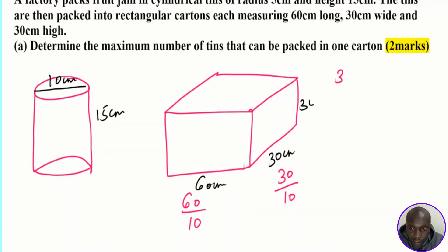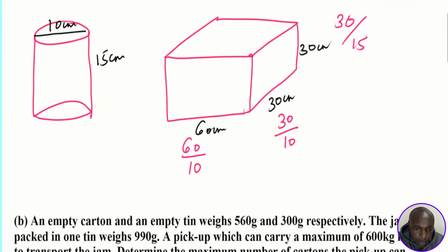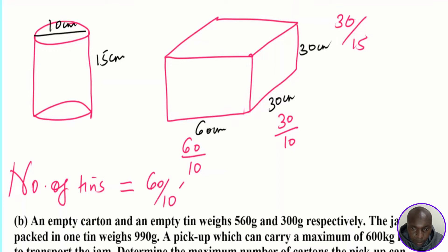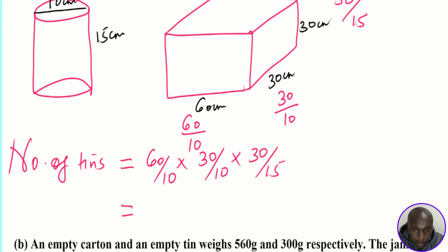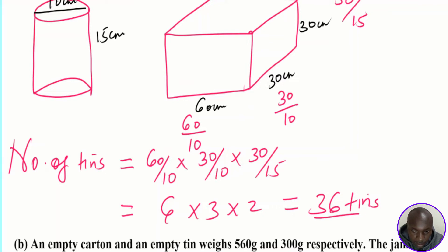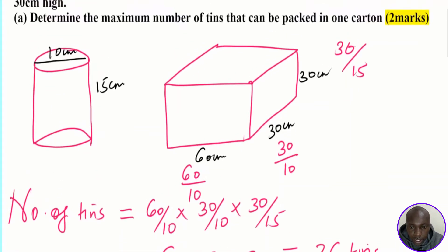Let me correct that — the height is 30 centimeters. To get the number of tins that fit in the height, we take 30 (height of the carton) divided by 15 (height of the cylinder). Therefore, the total number of tins is: 60 ÷ 10 (length) × 30 ÷ 10 (width) × 30 ÷ 15 (height), giving 6 × 3 × 2 = 36 tins. So 36 tins will fill this carton completely.